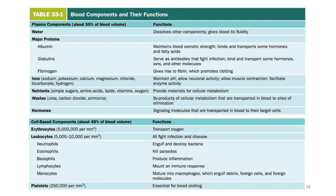Neutrophils engulf and destroy bacteria. Eosinophils kill parasites. Basophils produce inflammation. Lymphocytes mount an immune response. Monocytes mature into macrophages, which engulf debris, foreign cells, and foreign molecules. Platelets are essential for blood clotting.